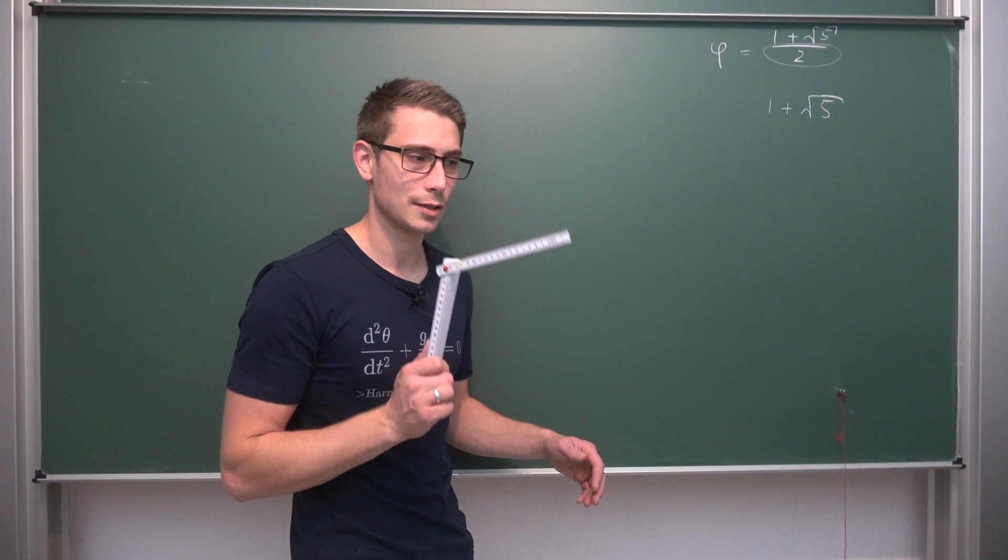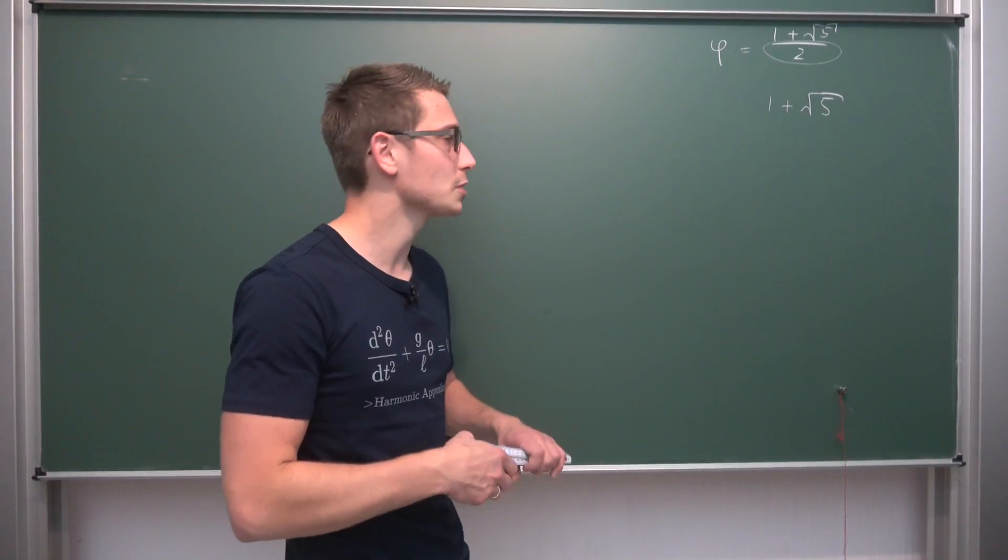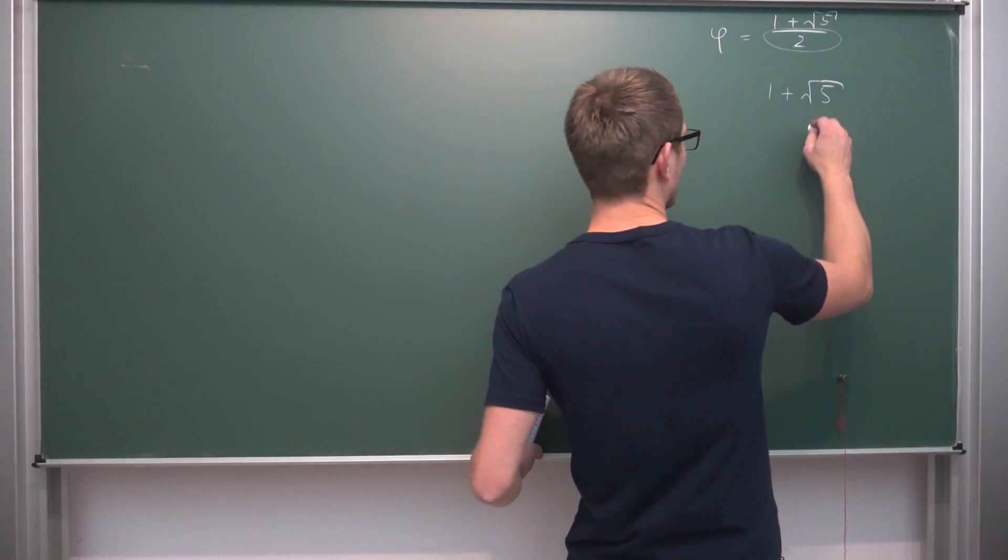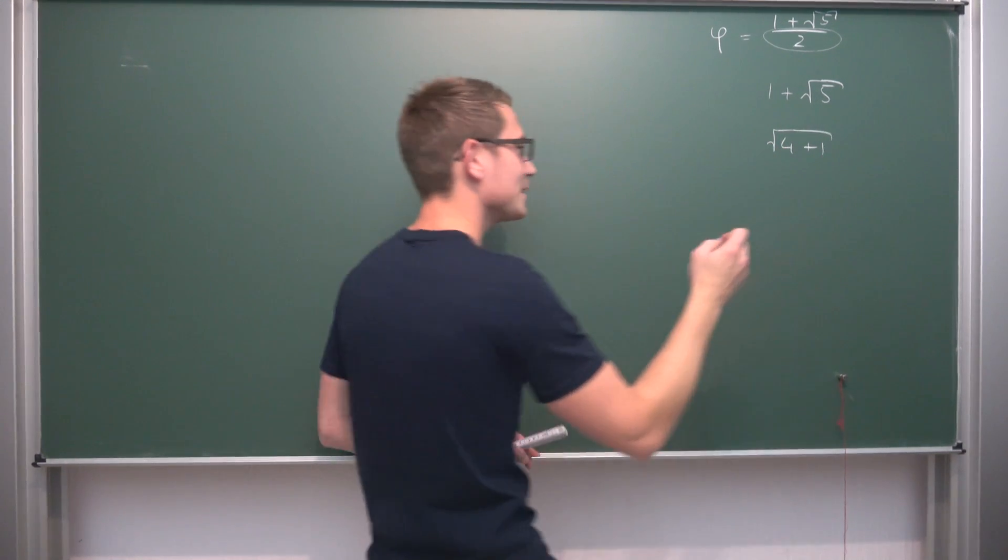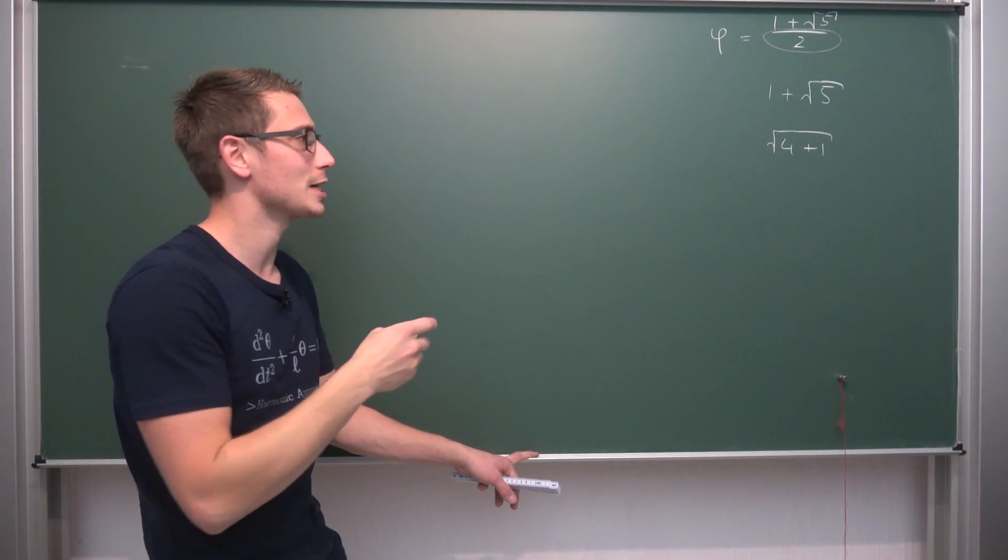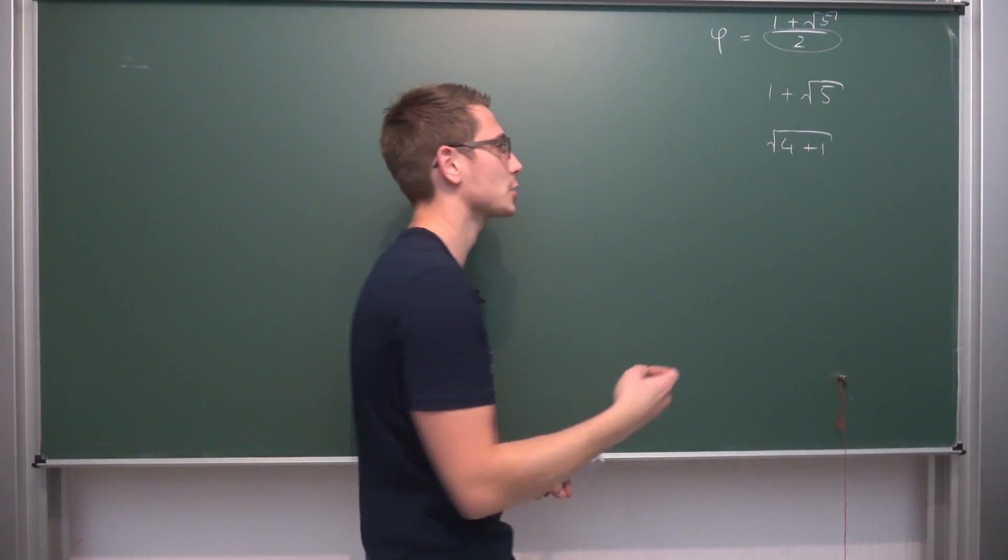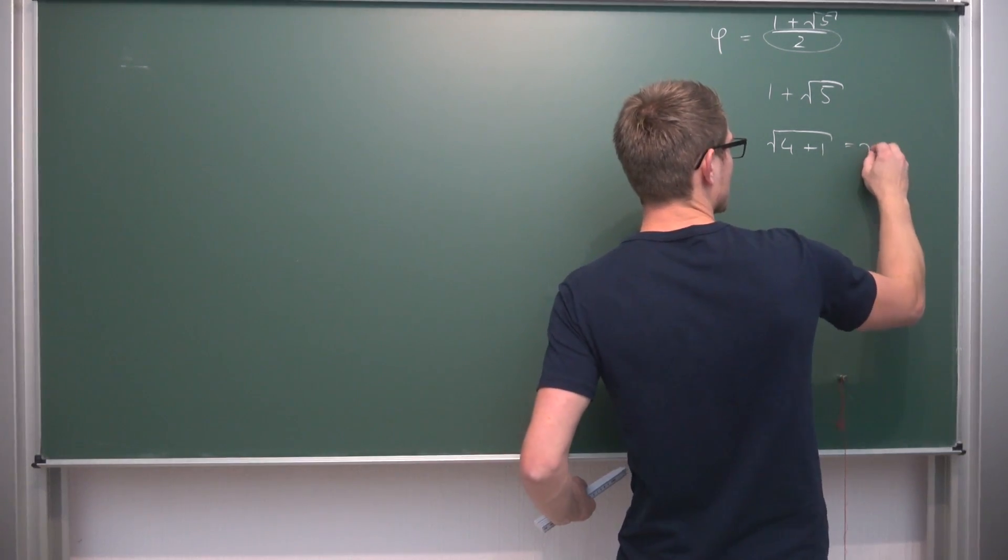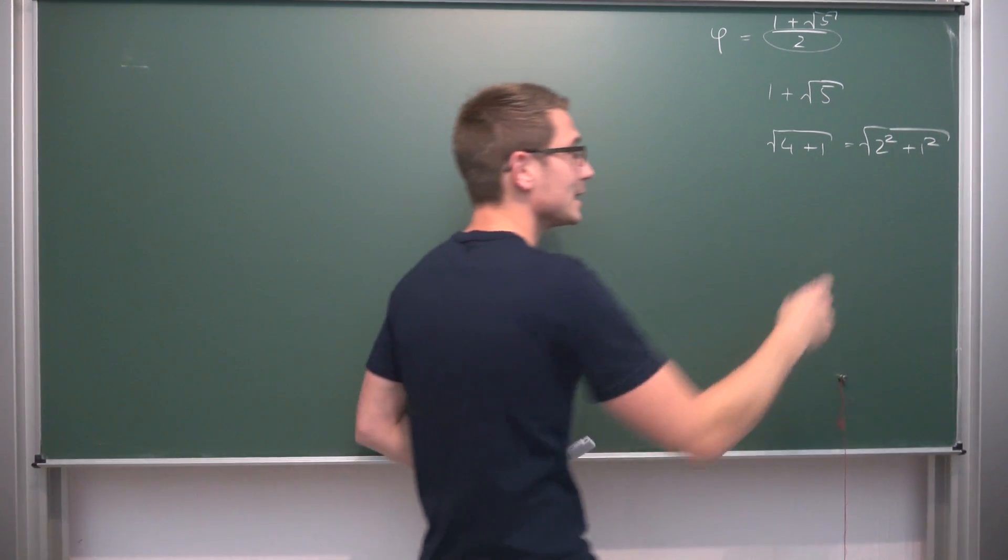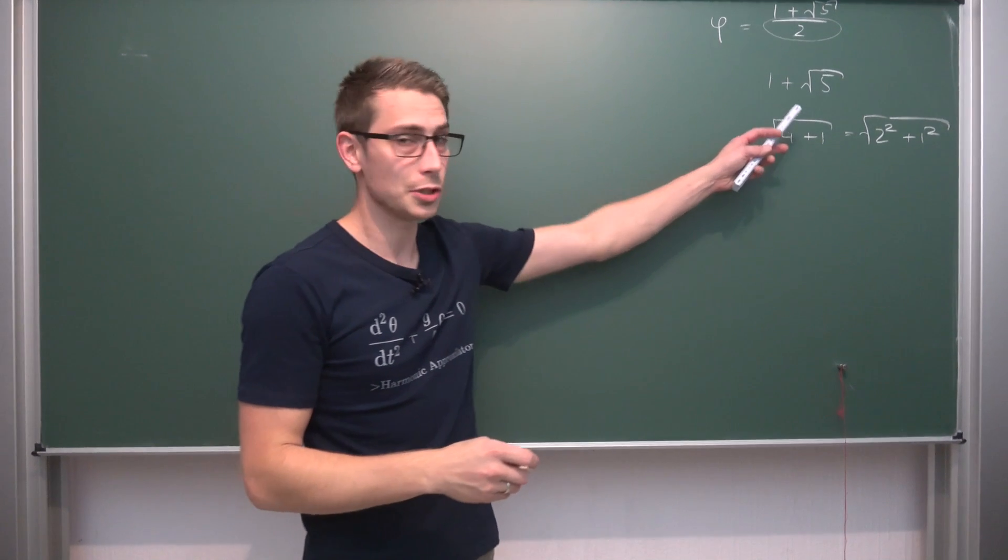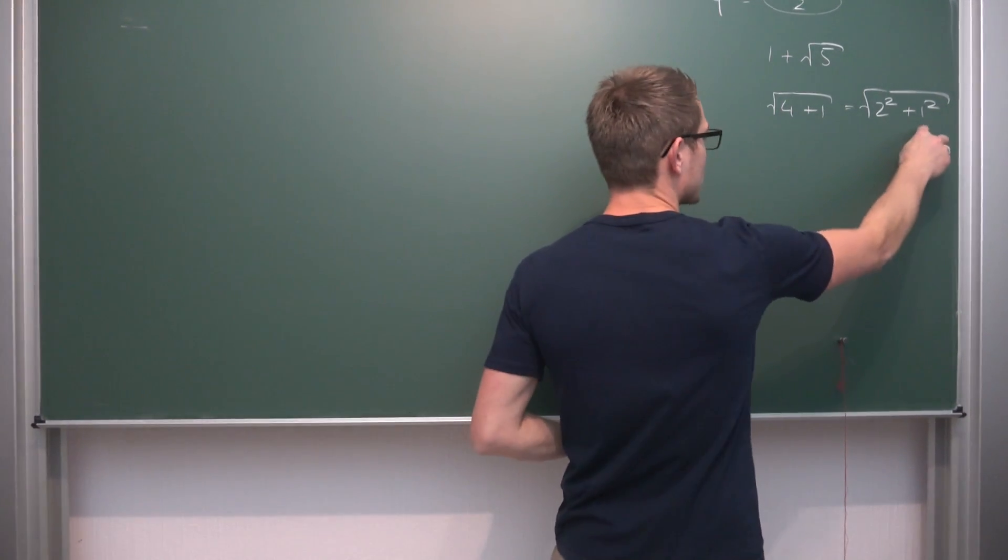Yes, you actually are able to do so. Because if we take a closer look, what is the square root of 5? This is just the square root of 4 plus 1. And this is very magical because this is just the consequence from constructing a right triangle. Namely, this right here is just the square root of 2 squared plus 1 squared. This right here is just the hypotenuse of a right triangle with side lengths 2 and 1.